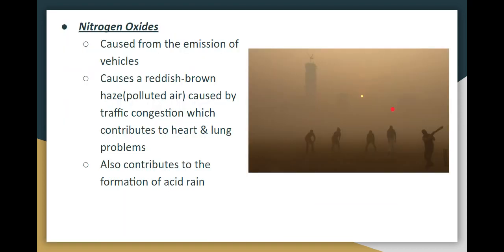Next is nitrogen oxide, which comes from vehicles. It creates a reddish-brown haze and can cause heart and lung problems. Nitrogen oxide and sulfur oxide also contribute to the formation of acid rain.